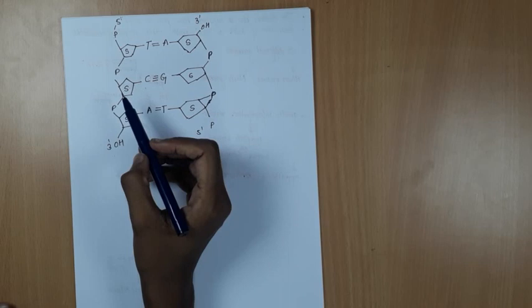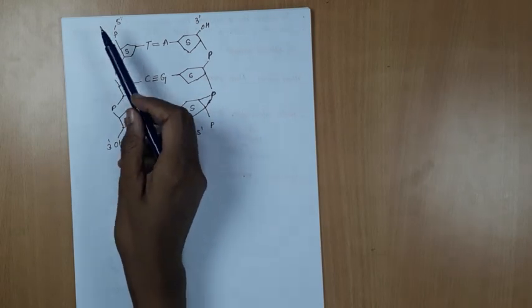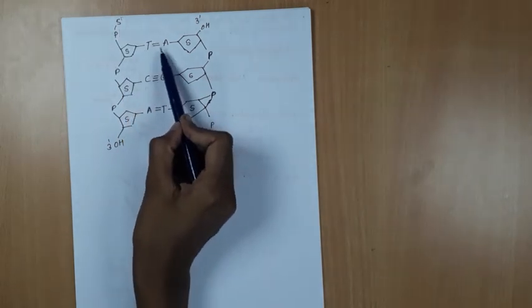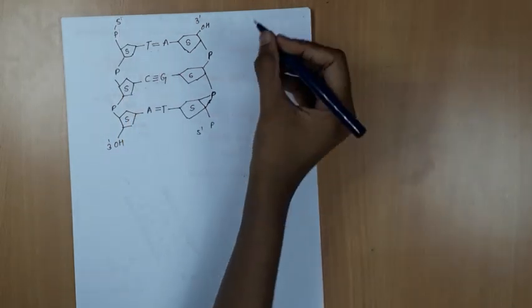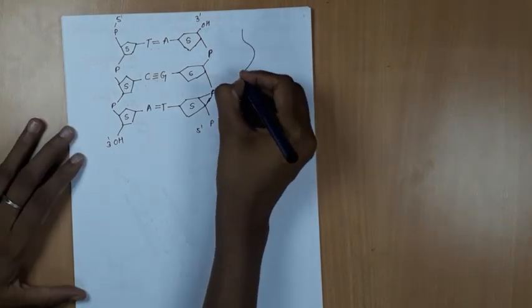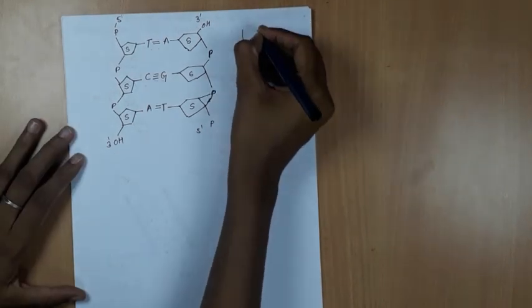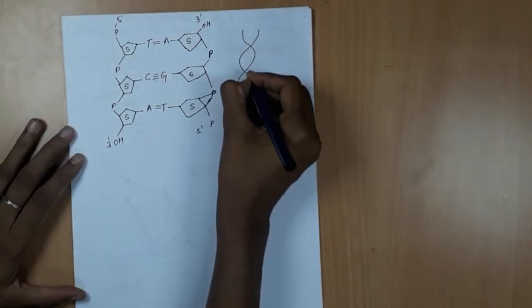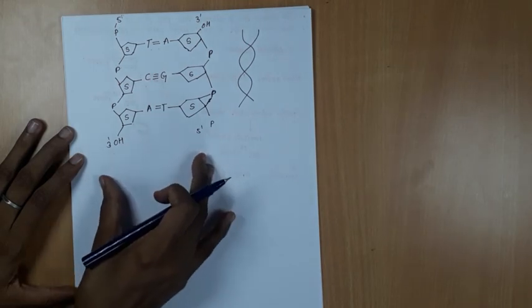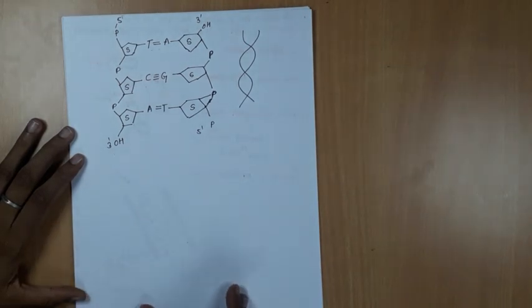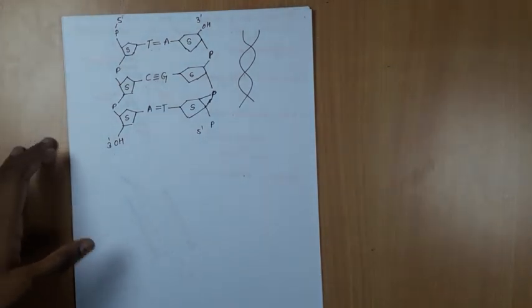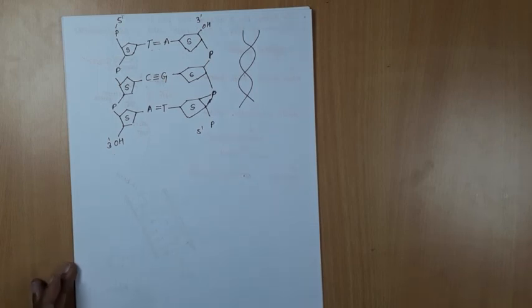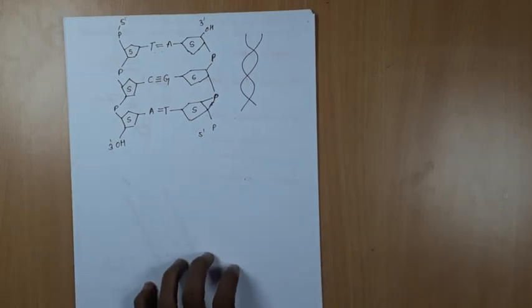These are the nitrogenous bases. So this is the structure of DNA — like this, the chain continues going on. Thank you for watching my video.